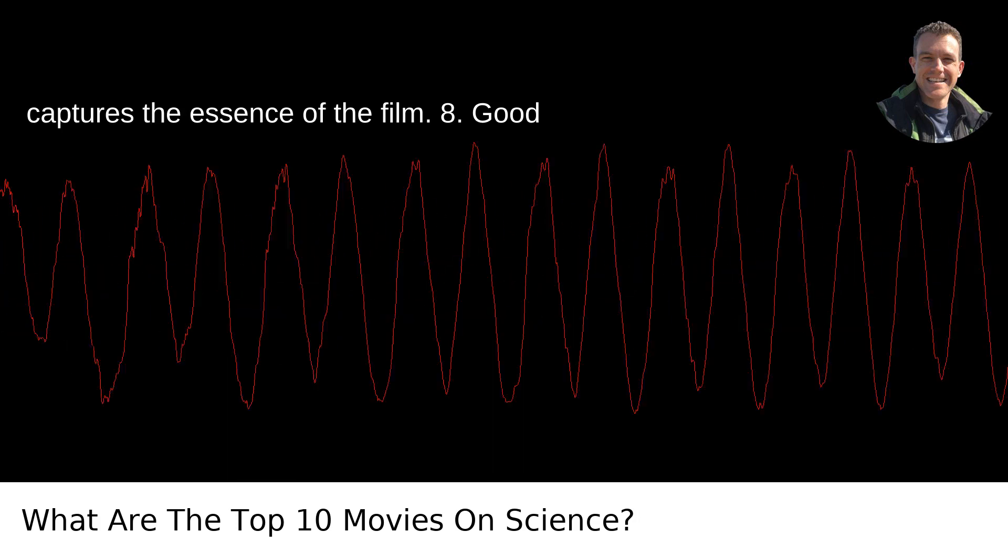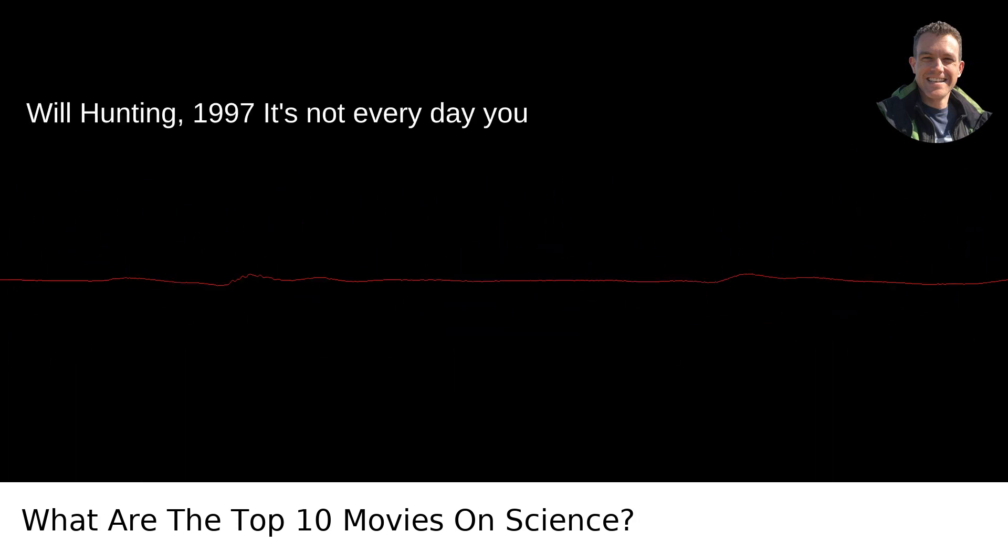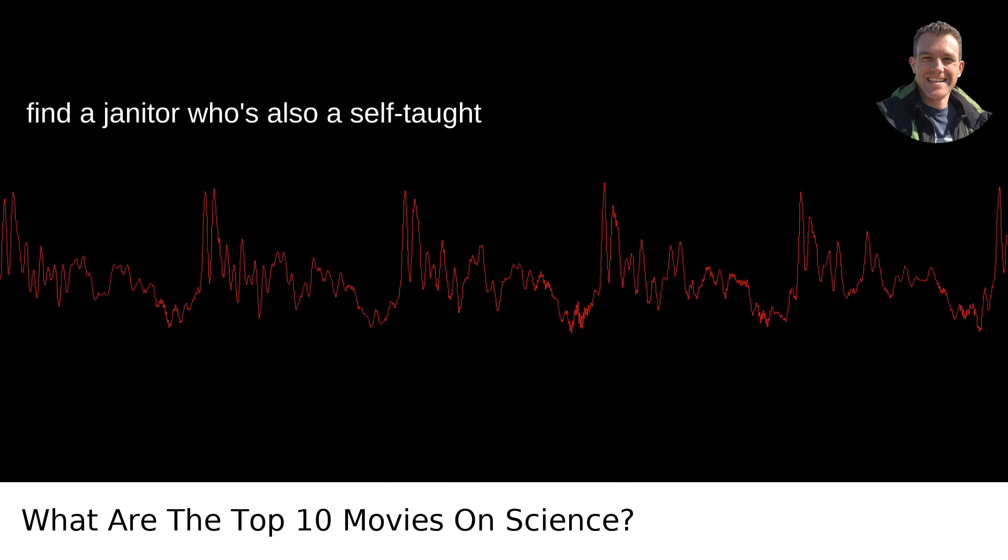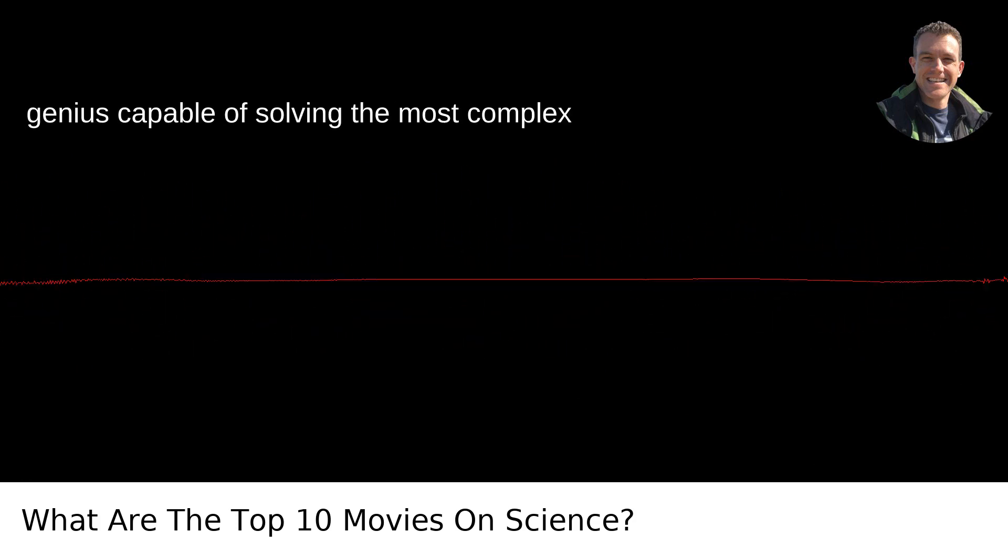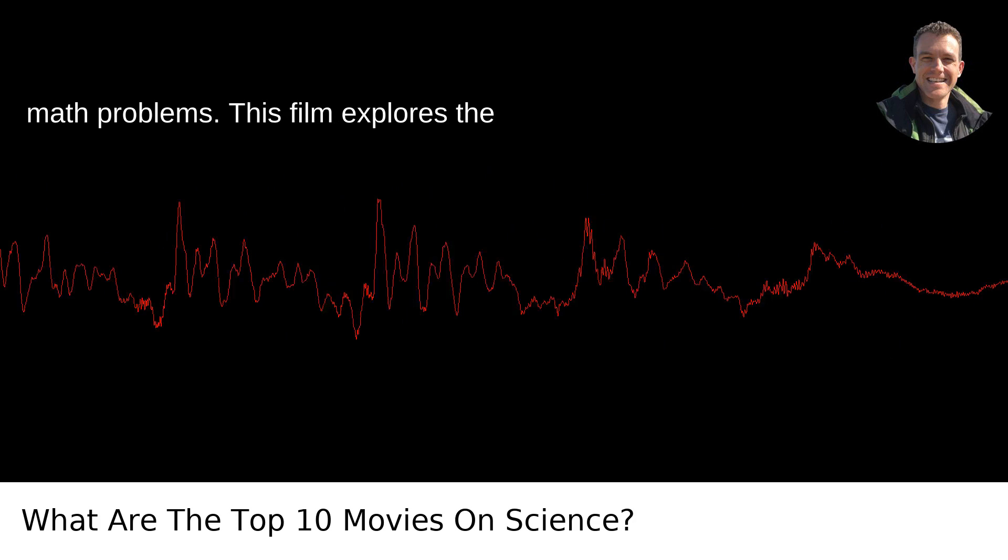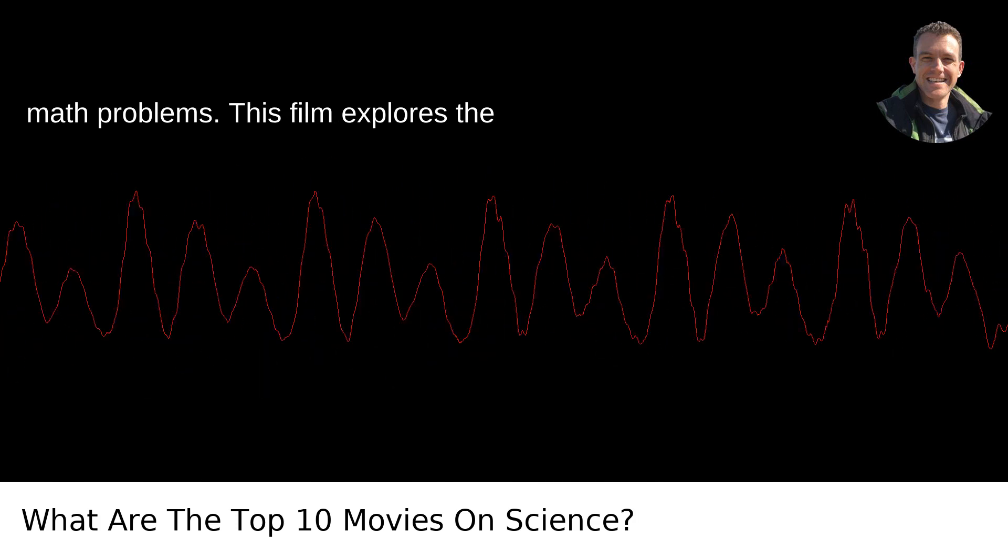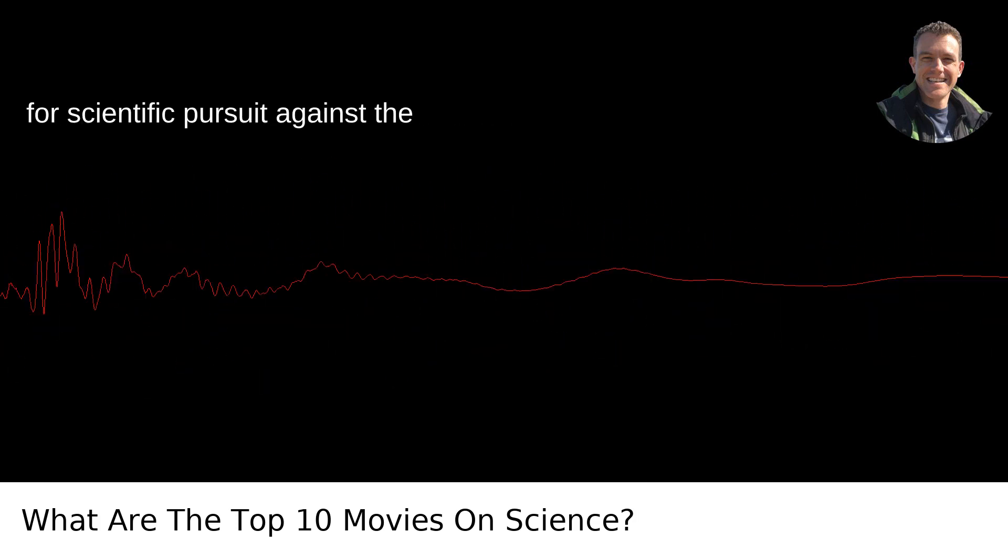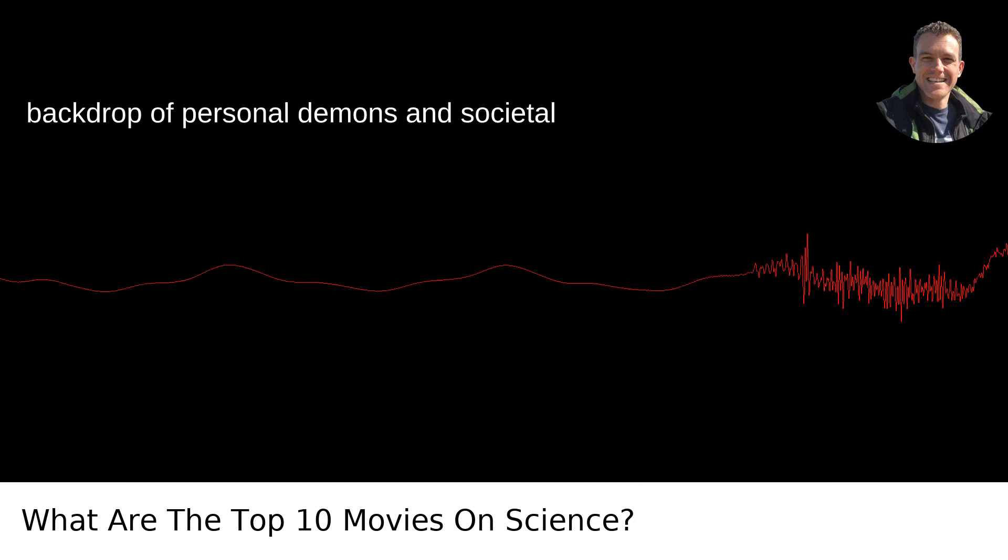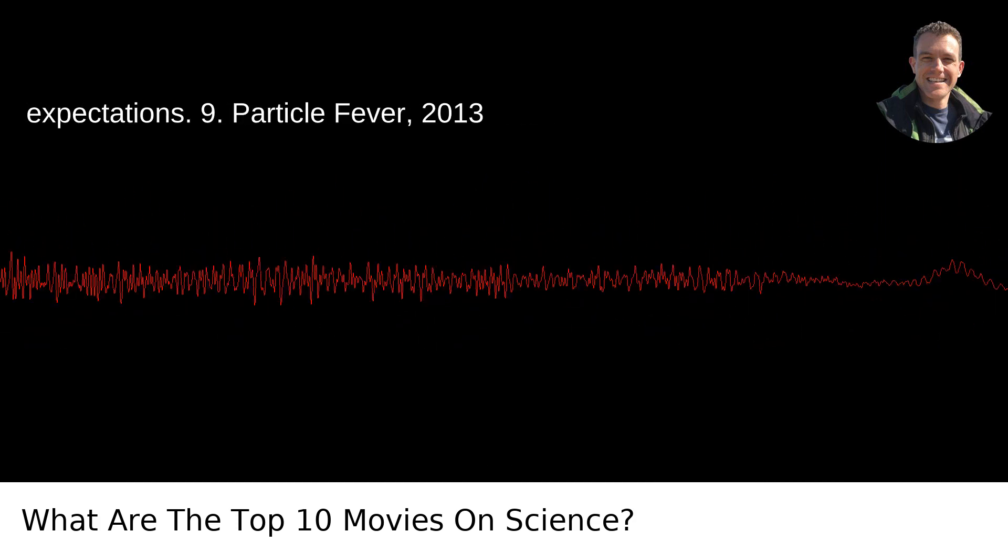8. Good Will Hunting, 1997. It's not every day you find a janitor who's also a self-taught genius capable of solving the most complex math problems. This film explores the complexities of leveraging innate talent for scientific pursuit against the backdrop of personal demons and societal expectations.